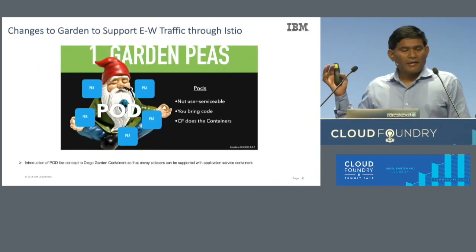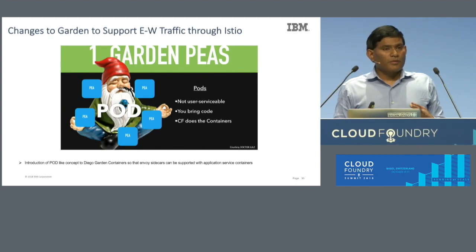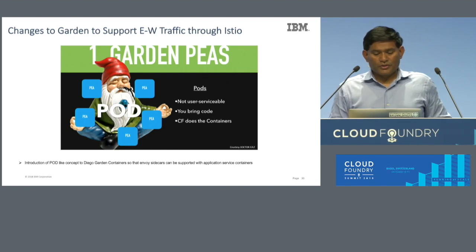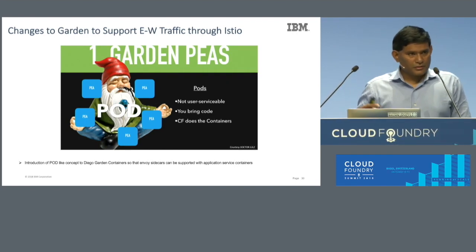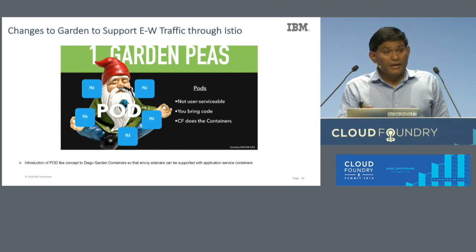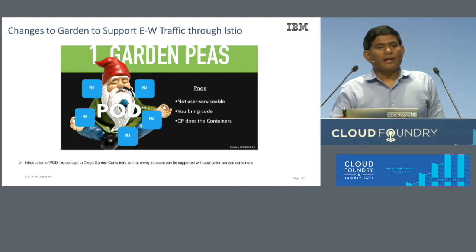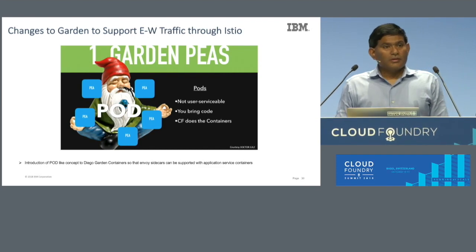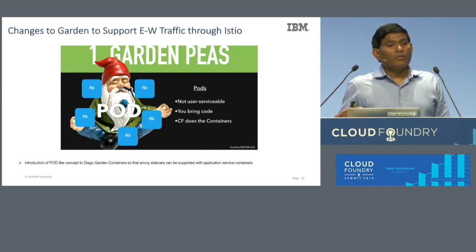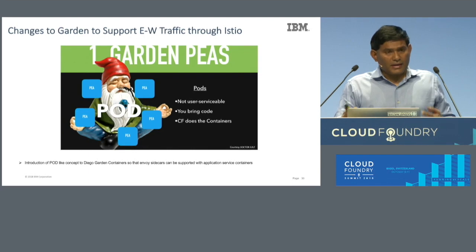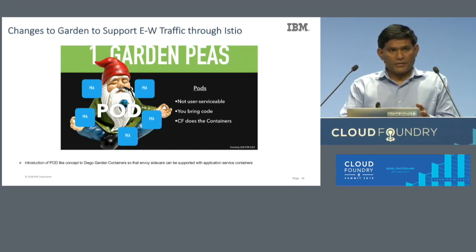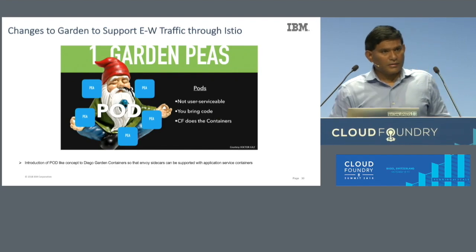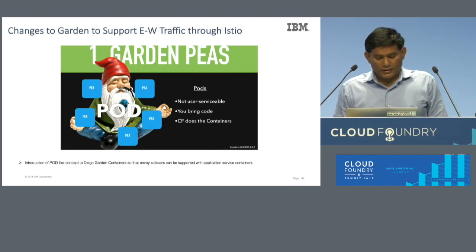Because Cloud Foundry didn't have the concept of a pod, you might have heard about 'peas' — a sidecar pattern for Garden containers — so you can have the Envoy intelligent proxies attached to services. This is recent work done by the containers tribe to support this Istio integration.